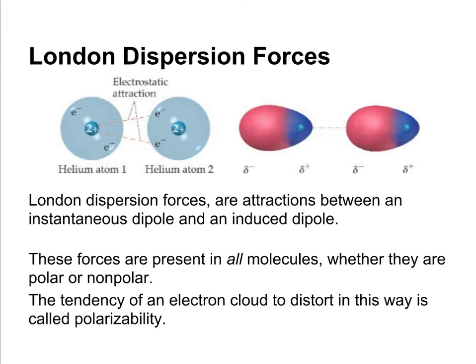The last type of intermolecular force is a London dispersion force. London dispersion forces are attractions between an instantaneous dipole and an induced dipole. We can have two normal atoms — looking at the example of helium atoms — we know that electrons are in constant motion, and sometimes those electrons are going to end up on the same side of an atom. When that happens, that gives that side of the atom a partial negative charge, and if two atoms are close enough together, that partial negative charge on one atom can induce a partial positive charge on another.